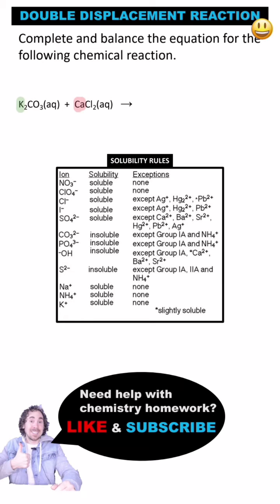In this reaction, the two cations, potassium and calcium, will switch places with each other to form two new ionic compounds. A potassium ion has a positive one charge and that's why two are needed here because carbonate has a two minus charge.